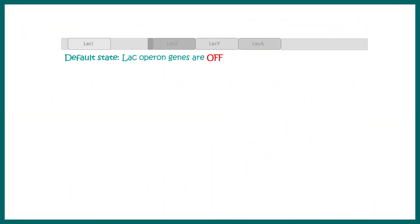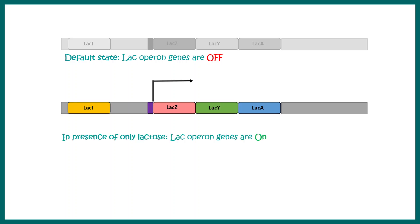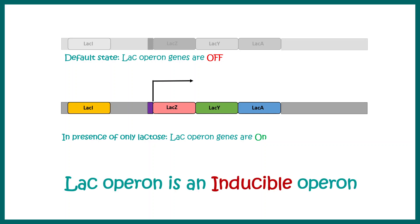Lac operon is an inducible operon, meaning the default state is off, and when lactose is present, lac operon genes are turned on — that's why it's called inducible. Let's quickly recap how the lactose operon performs in the presence of glucose and lactose.